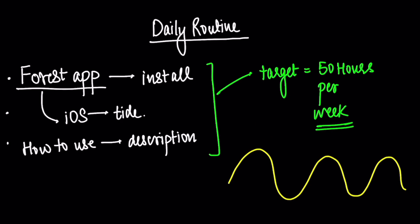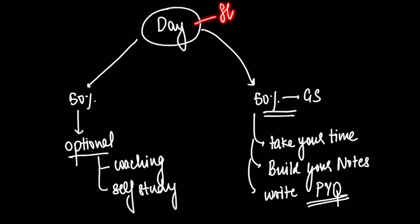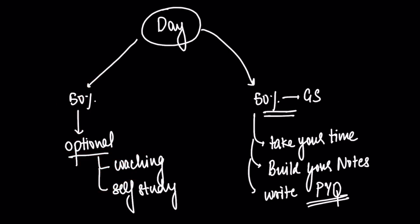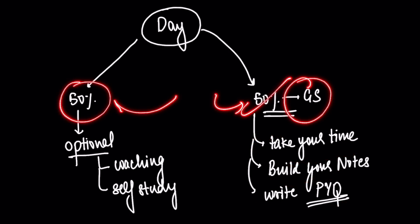So now till November, 50 hours per week is the target, and the focus has to be on the mains. Now, how to split your day? Those 8 hours per day will approximately give you 50 hours per week. One day you will take a break in the week, so about 8 hours per day, but some days it will be 10 and some days it will be 6. I would recommend that 50% of your day should go to optional - optional coaching, self-study, whatever you do. For anthropology, I have already given tips in a previous video. For your optional, you can look at some other topper's video. And 50% of your time you need to give to GS. In GS also, the subjects that are untouched - you need to take your time and build your notes and write previous year questions. I have already shown how much previous year questions repeat in mains - in optional also, in GS also. So you need to take your time and build your notes for GS. 50% of your day goes to GS, 50% of your day goes to optional.